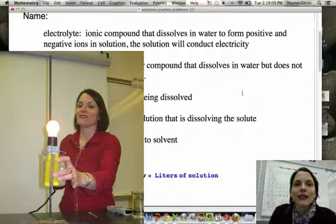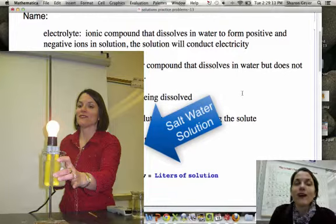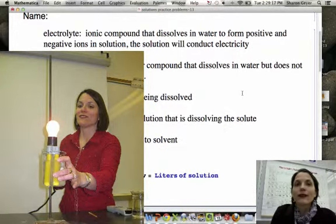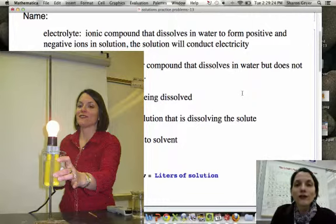Just to review what we learned in class. An electrolyte is a solution made up of an ionic compound that is soluble in water. And when the electrolyte dissolves in water, it forms positive ions and negative ions. And those free-flowing ions can conduct electricity. As you saw in class, the light bulb went on.